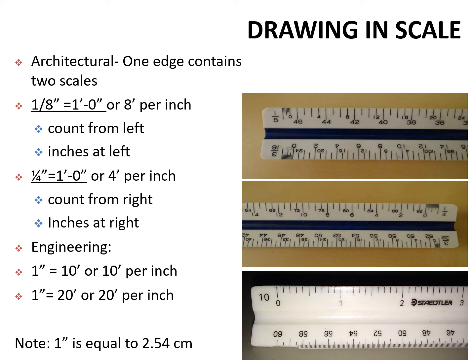Architectural scale lays two scales one on top of each other on the same blade. If you slide to the other side you would see quarter inch at the top, with the zero for the lower string of numbers. You line your line right up on that zero and use those numbers to count how long your line is. If you're not ending on exactly a foot, you have the little scaled ruler to get to the nearest inch.